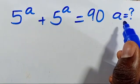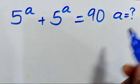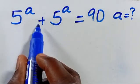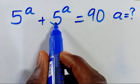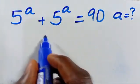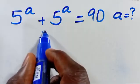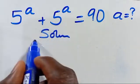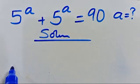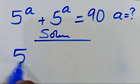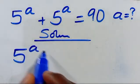What is the value of a, given that 5 to the power of a plus 5 to the power of a equals 90? Let's work through the resolution from here.